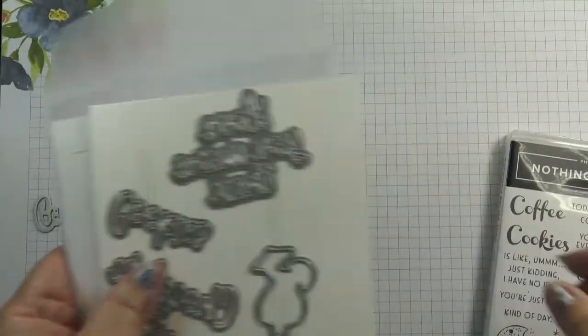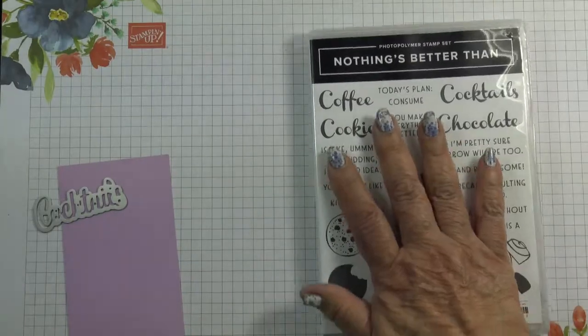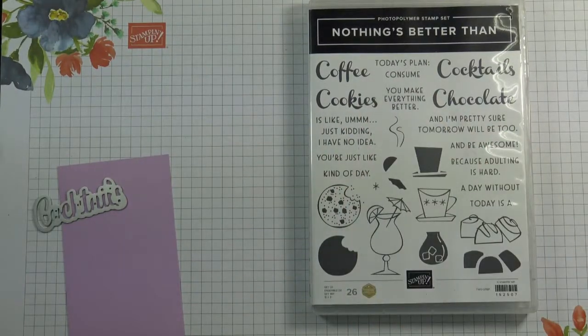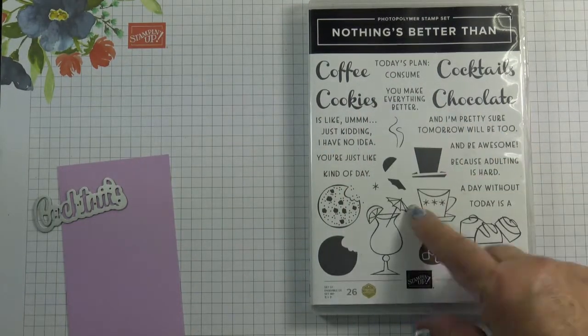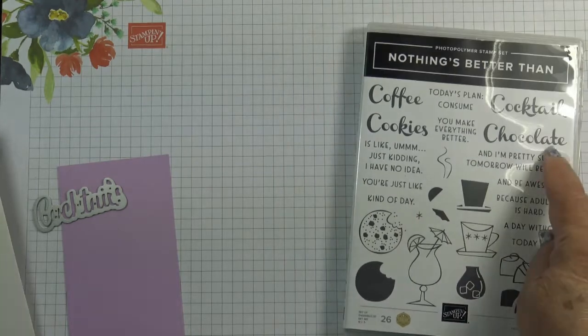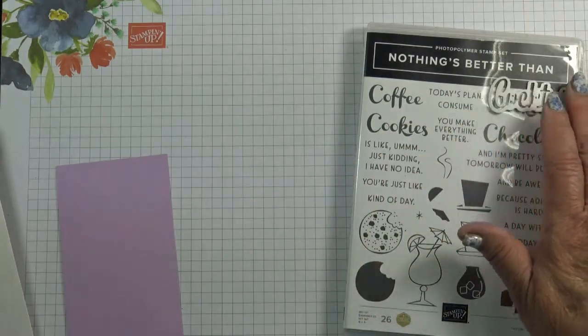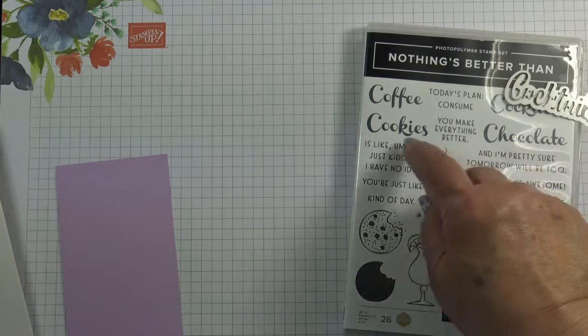These are the Love You More Than dies which coordinate with the Nothing Better Than Photopolymer stamp set. As you can see, these dies cut out letters like cocktails, chocolate, cookies, and coffee.